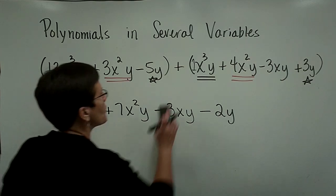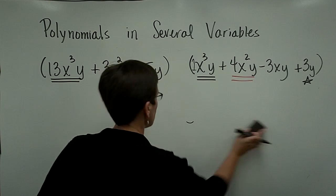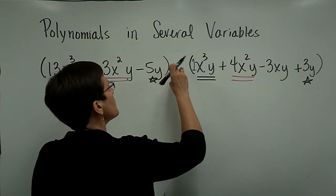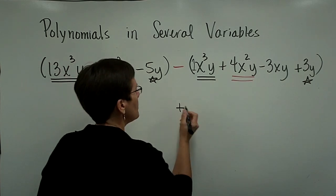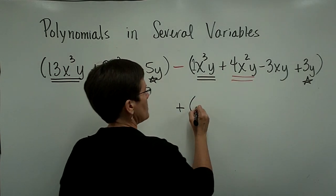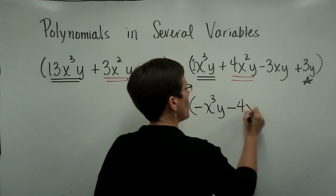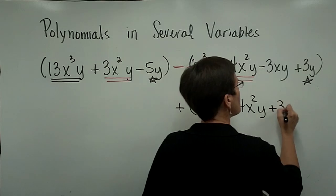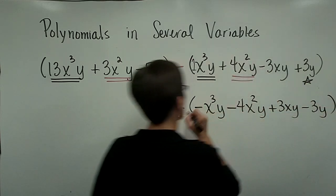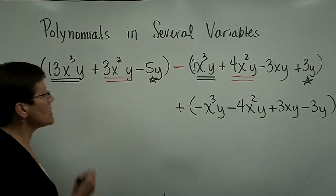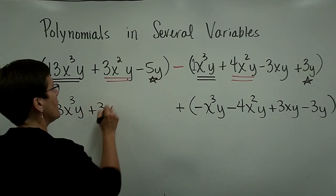I don't want to write a whole other problem up here. I just want to say to you that if this was a subtraction problem, so if this had a minus sign here, you would be adding the opposite of all these. So a negative x³y, and minus 4x²y, and then plus 3xy, and then here minus 3y. So the second polynomial would have its signs changed and the like terms would be added together.